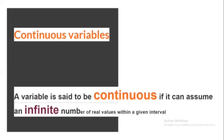A variable is said to be continuous if it can assume an infinite number of real values within a given interval. For instance, consider the height of a student: the height can't be negative and it can't be higher than three meters, but between zero and three the number of possible values is theoretically infinite. A student may be 1.6321748755 meters tall. In practice, the reported height would be rounded to the nearest centimeter, so it would be 1.63 meters. Age is another example of a continuous variable that is typically rounded down.